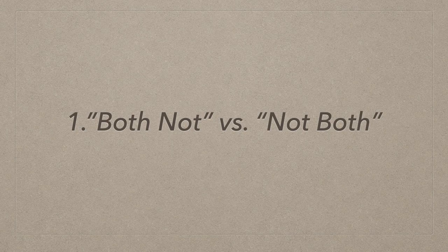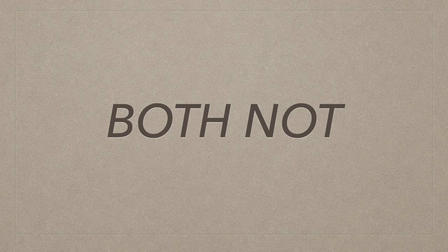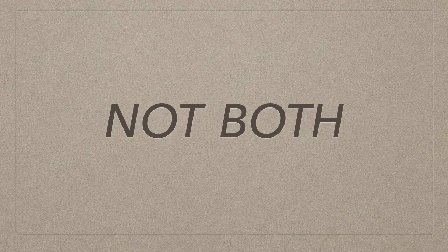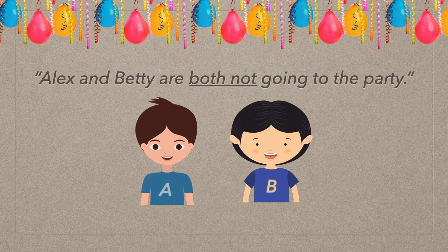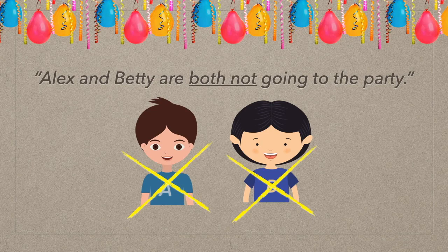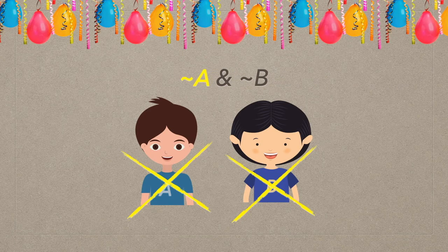Number one: both not versus not both. In English, word order matters. Both not is entirely different from not both. For example: Alex and Betty are both not going to the party. Who's going to the party? Not Alex and not Betty — because we just said they're both not going. So we translate this to not A and not B, because Alex is not going and Betty is not going.